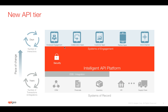We at Apigee built the Apigee Edge Intelligent API platform to solve all these problems. We help you secure your APIs using all the latest security techniques like OAuth, tokens, and even the threat protection policies that we give you out of the box. We help you build your API program starting from a simple API proxy to a program to a platform. We help you scale your existing legacy APIs — even though your backend supports X number of calls, we help you scale your APIs to thousands of TPS using the Apigee Edge Intelligent API platform and different caching techniques.